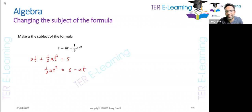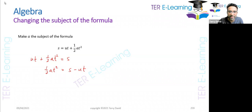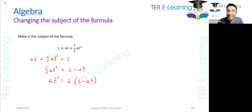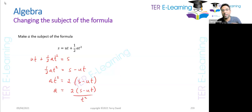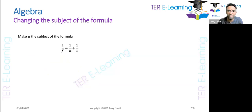On the left hand side we have one half at squared. The easiest way to get rid of the half is to multiply both sides by two. When we multiply by two we get at squared is equal to two multiplied by everything on the right hand side, which is s minus ut. To make a the subject we divide by t squared, giving a is equal to two(s minus ut) divided by t squared.